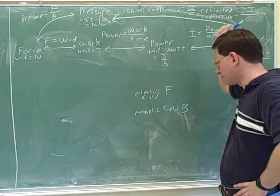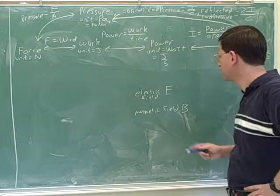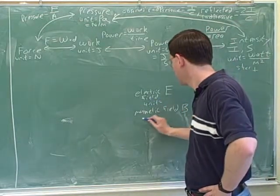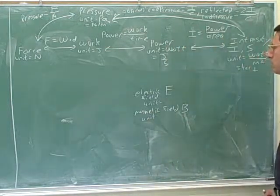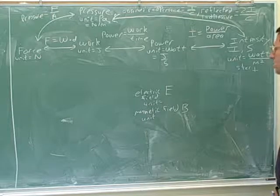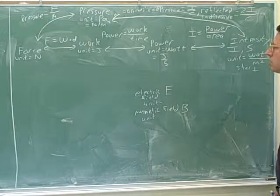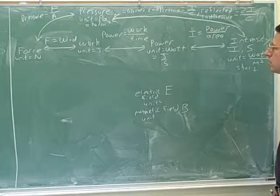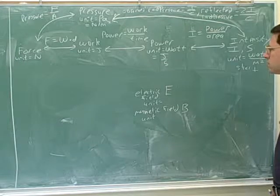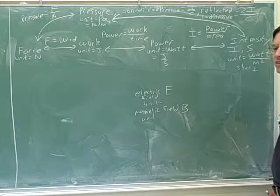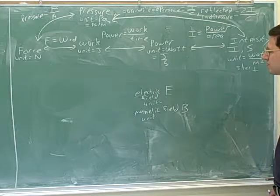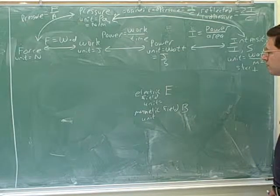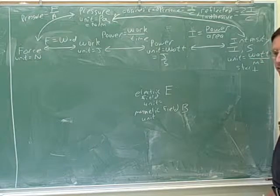Well, the Poynting vector is coming from the electric field and magnetic field. Do you remember what the units are for the electric field? Oh, you worked it out. Okay. That's right.